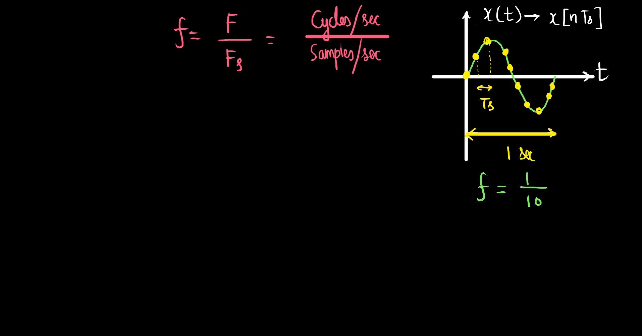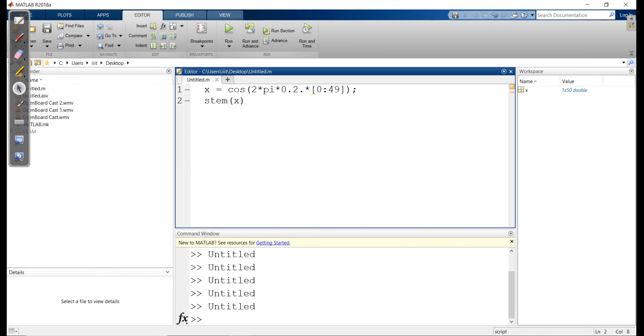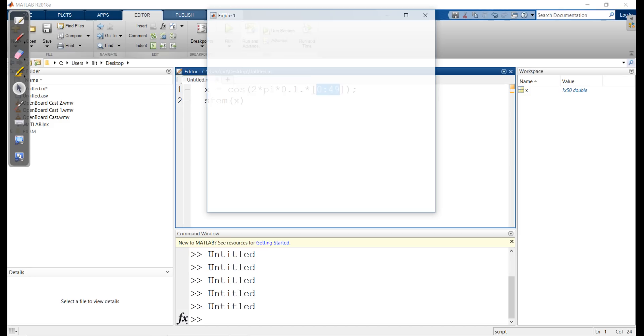Let's try to plot this. The signal in this example is cos(2π · (1/10) · n). I will plot it using MATLAB — you can also use Scilab or GNU Octave as open-source alternatives. The expression is cos(2π · 0.1 · n), where n runs from 0 to 49, giving 50 samples.